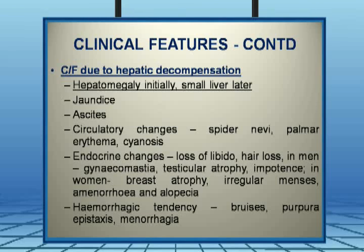Endocrine changes will occur in both male and female patients. In men: loss of libido, hair loss, gynecomastia, testicular atrophy, and sexual dysfunction. In women: breast atrophy, alopecia, irregular menses, and amenorrhea. There can also sometimes be hemorrhagic tendencies like bruises in the skin, purpura, epistaxis, menorrhagia, etc.